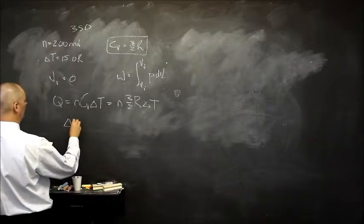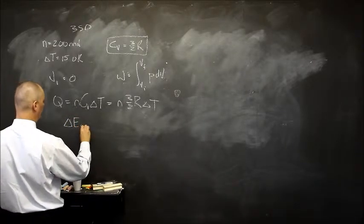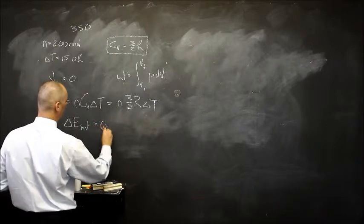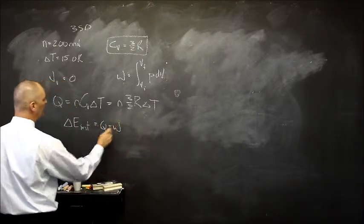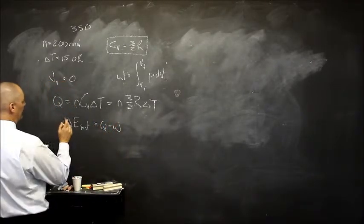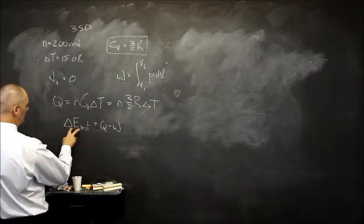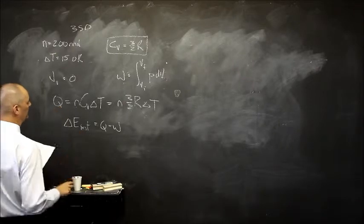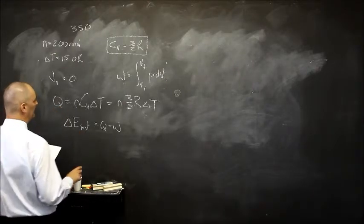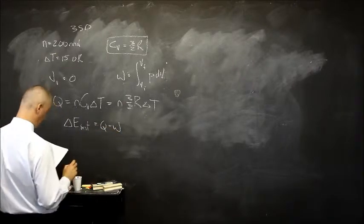Because next question is the change in internal energy. First law of thermodynamics: change in internal energy equals Q minus W. But because work was zero, this equation and this equation is going to be - the change in internal energy and Q are going to be exactly the same, inasmuch as W is zero in this case.